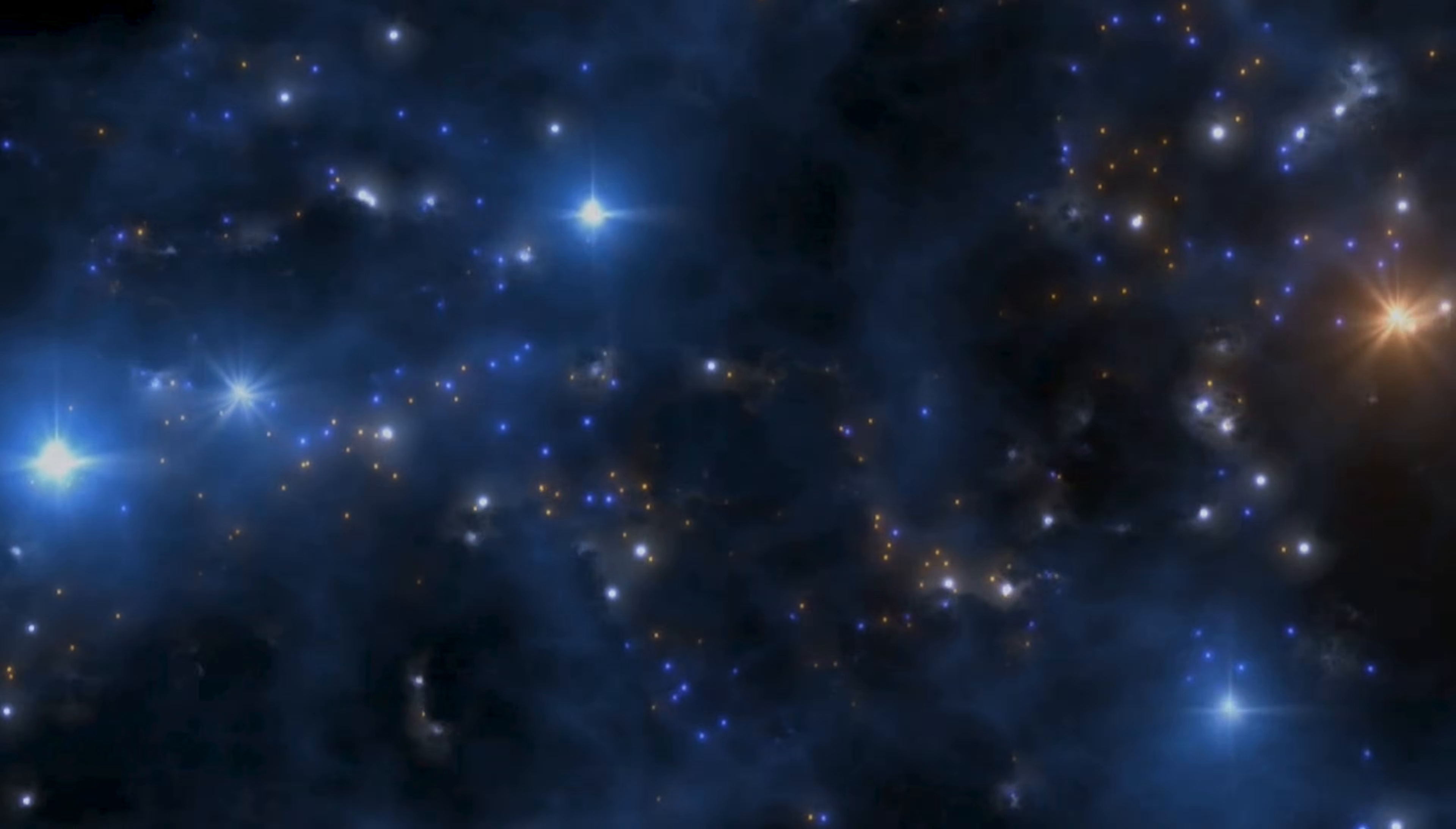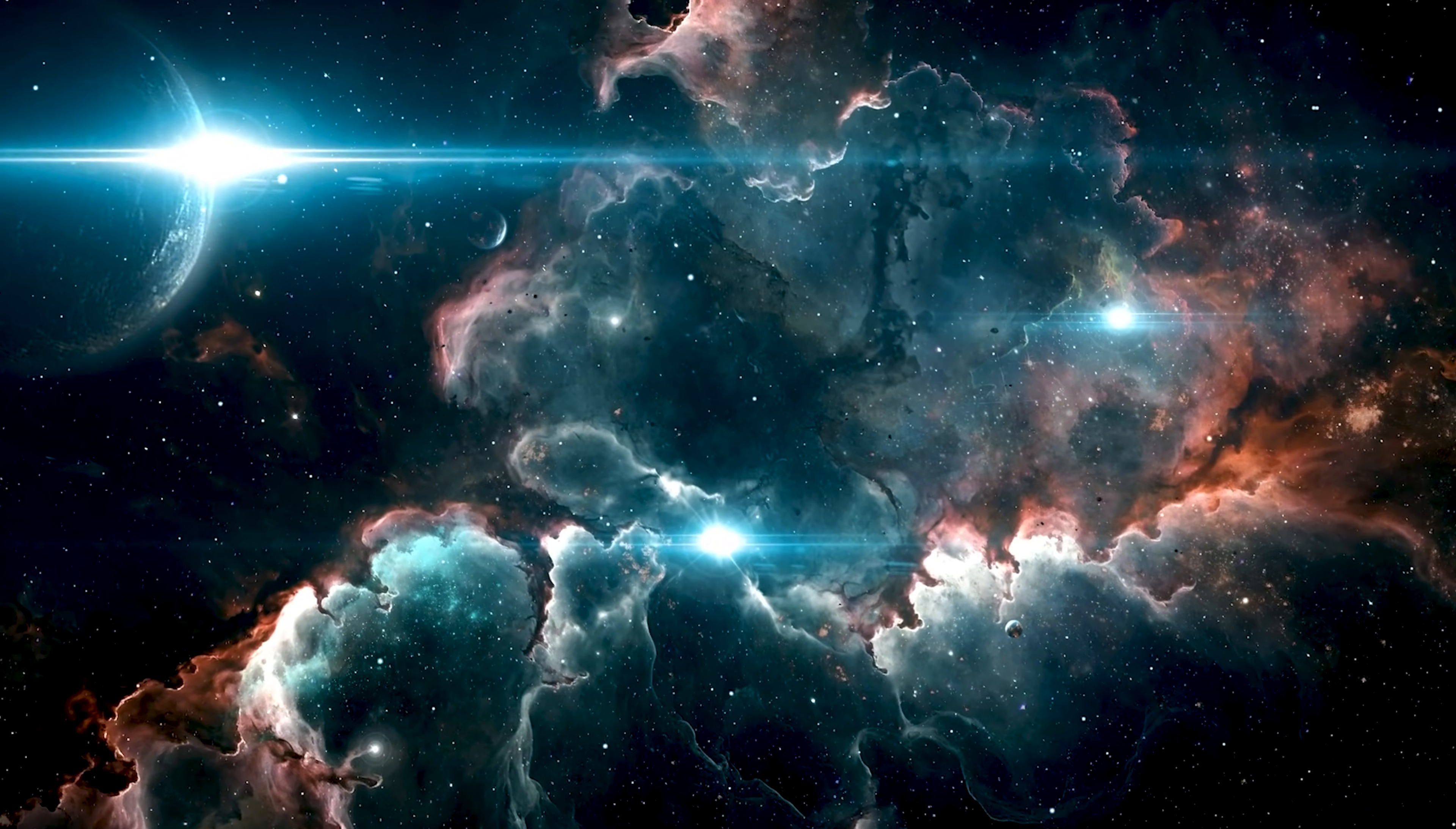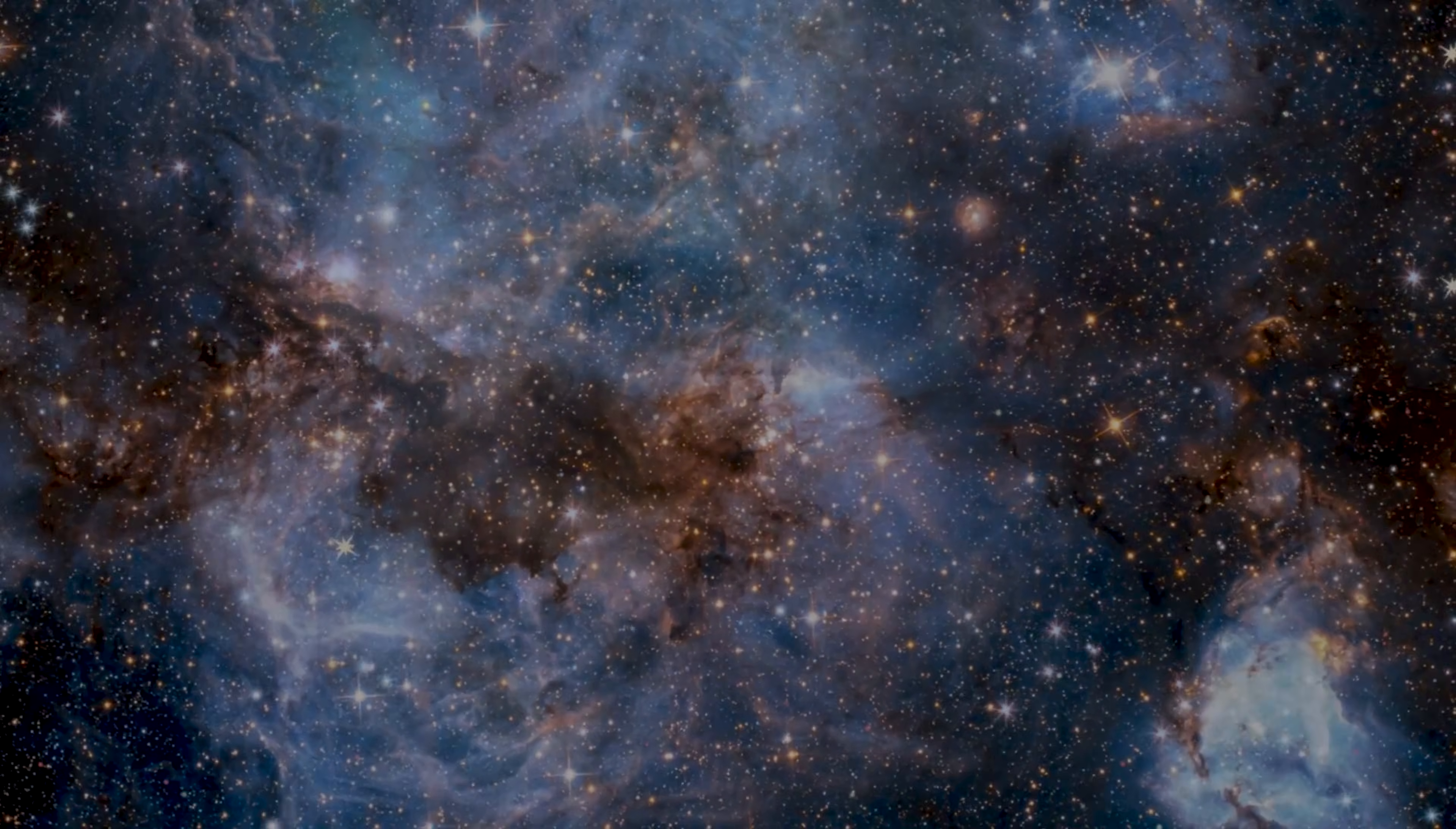And because the universe keeps expanding, the Hubble Sphere itself grows over time. That means light from some galaxies that were once racing away faster than light can still reach us. Their photons are fighting an expanding universe, climbing a cosmic escalator that's getting longer as they move. But there is a hard limit, a final boundary. That boundary defines the observable universe, a vast bubble about 92 billion light years across.